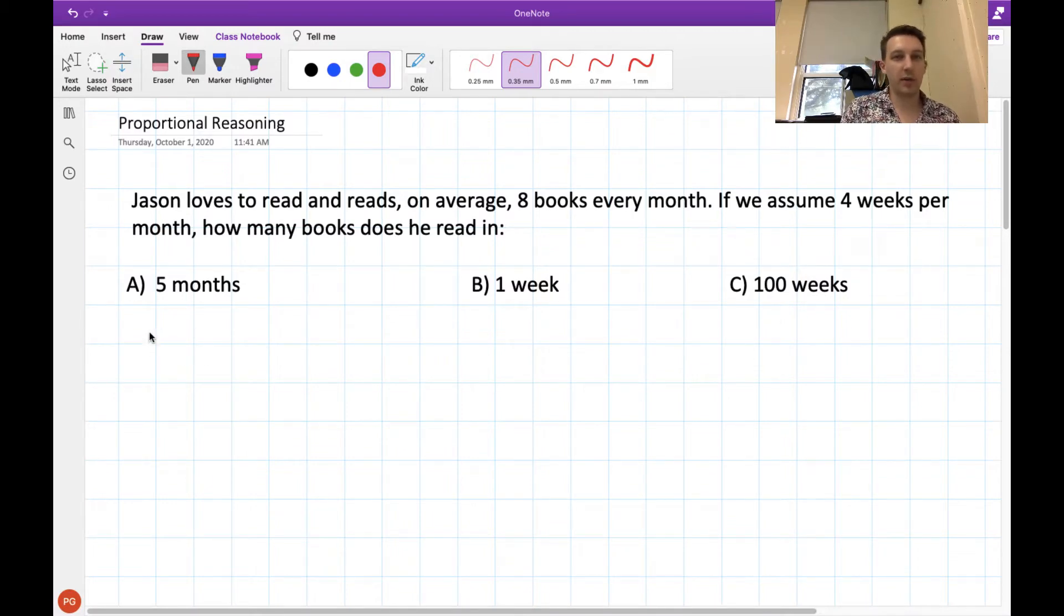So starting with the first one, we know that he reads 8 books per 1 month. We would call this a rate or a ratio between the number of books he's reading and the number of months it takes him to read those books. Now what we want to know is how many does he read in 5 months? Since the ratio needs to be the same between the two of these, if we're going from 1 month to 5 months, that's multiplying by 5, and we do the same thing on the top. From 8 books, we would go all the way to 40 books. So our answer in this case would be 40 books.